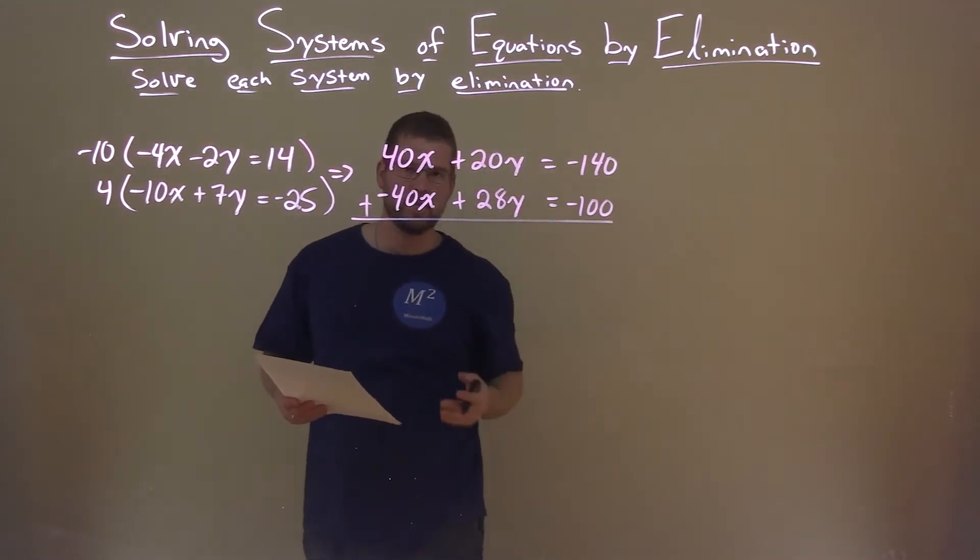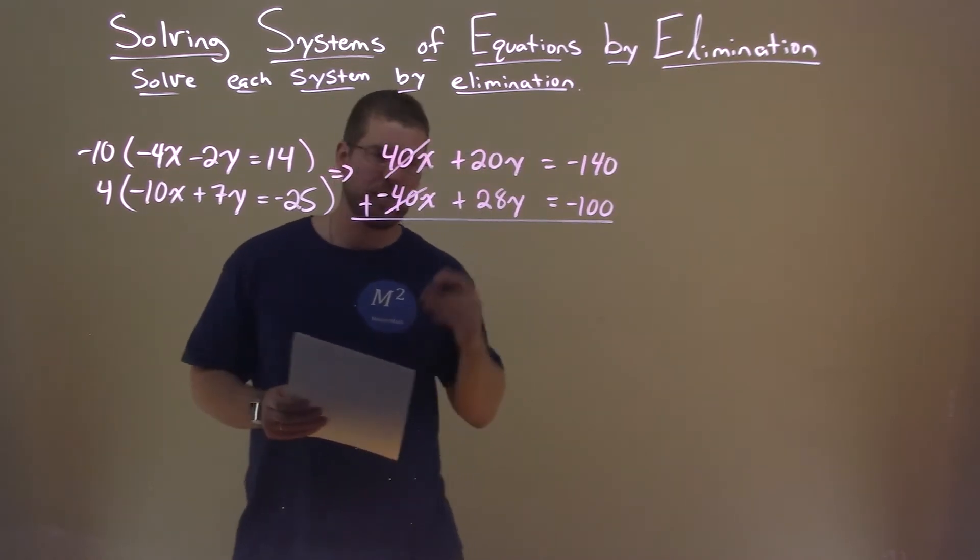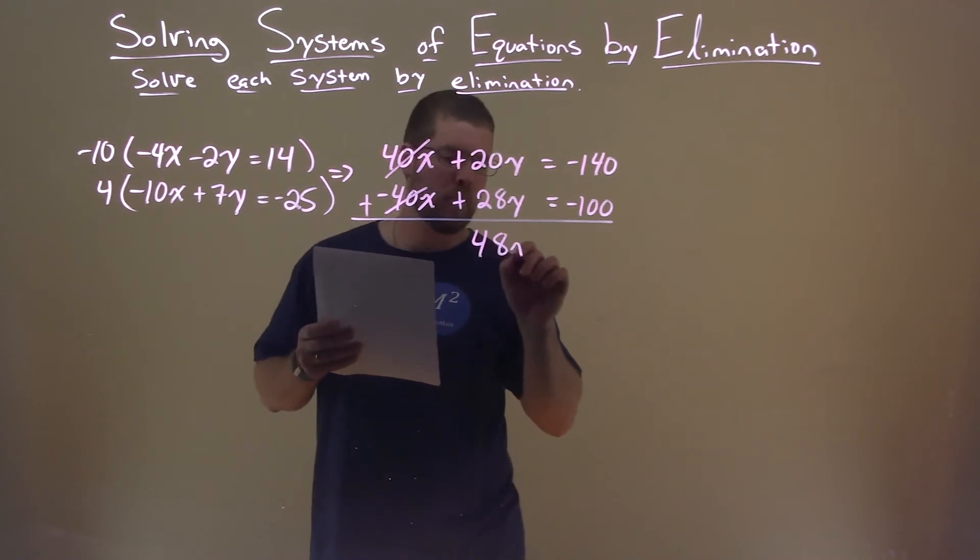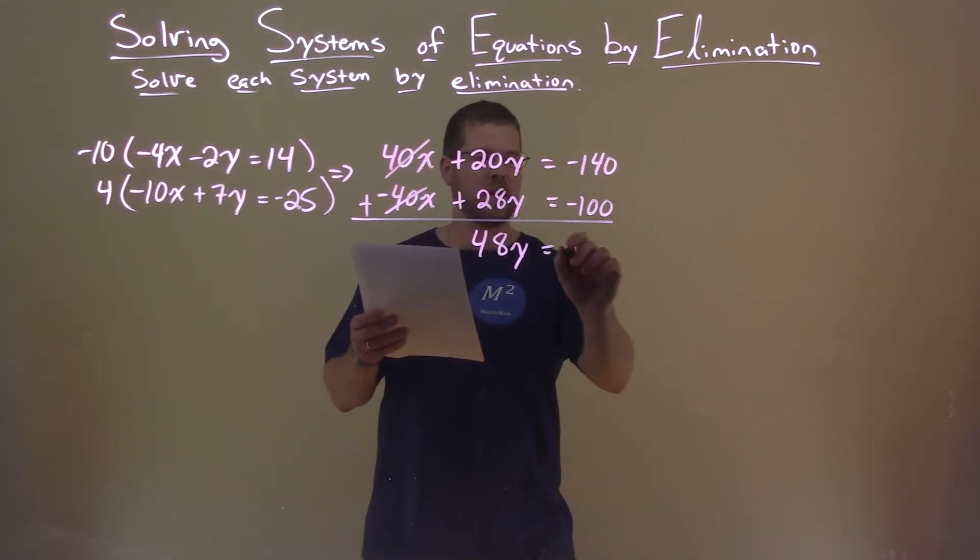All right, let's add the two equations together. 40x plus negative 40x is just 0. 20y plus 28y is 48y. And negative 140 plus a negative 100 is a negative 240.